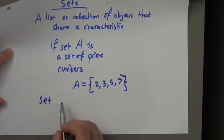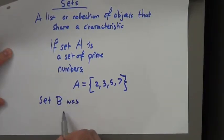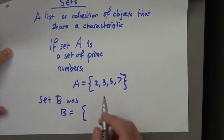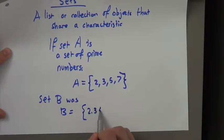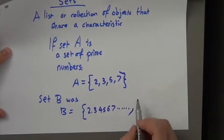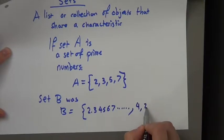Now, if I said sets B was this, and there's a reason why I'm writing these numbers, 2.3, 4.5, 4, 2.2.